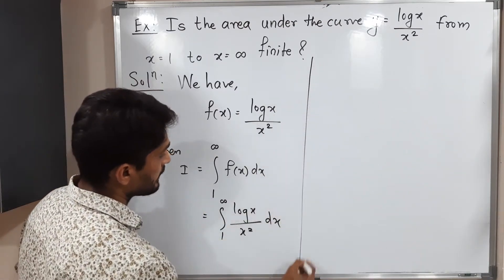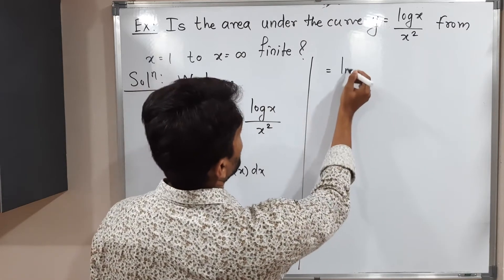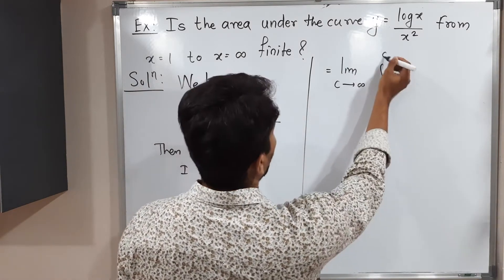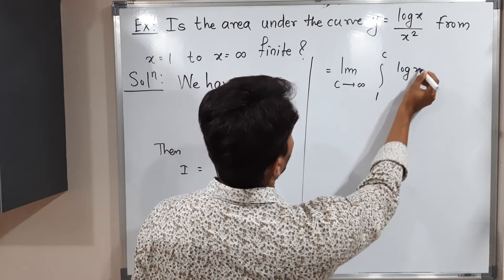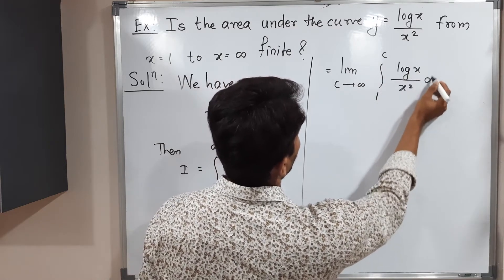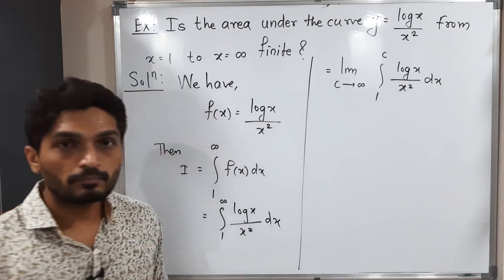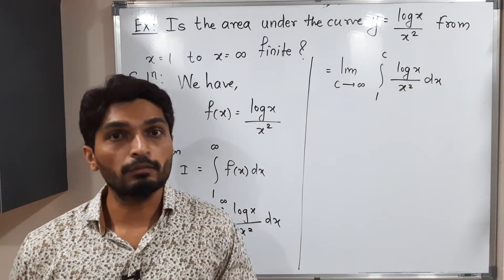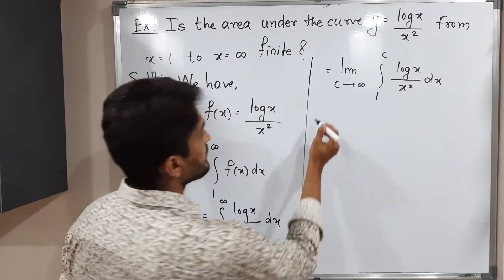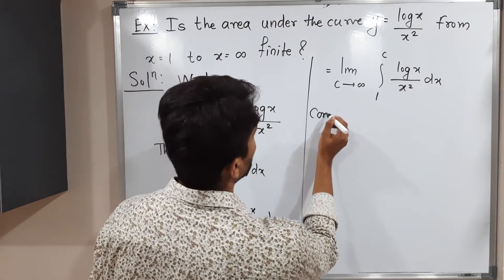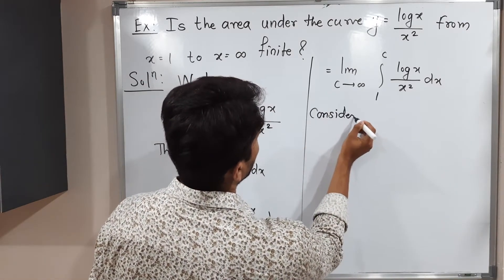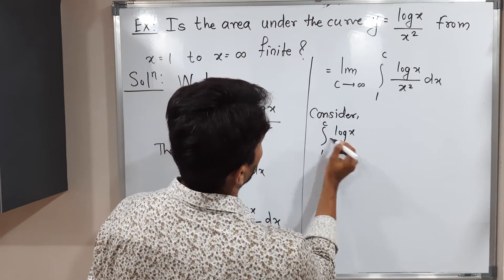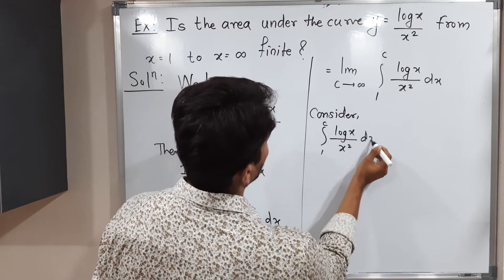We take a constant and apply the limit. So we write: limit as c tends to infinity of the integral from 1 to c of log(x) / x² dx. Let us focus on this integration first, and finally at the end we will apply the limit.